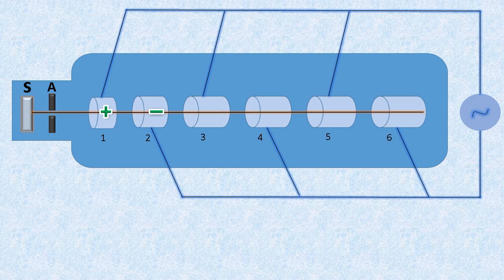The length of cylinder 2 is such that as the particle emerges out of cylinder 2, the cylinder 2 comes out at positive potential and the cylinder 3 at negative potential. Consequently, the positively charged particle is again accelerated in the gap between these two cylinders.